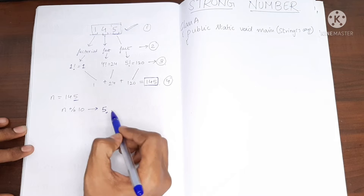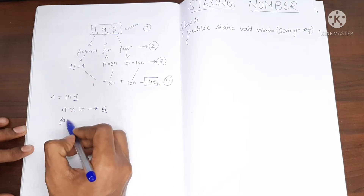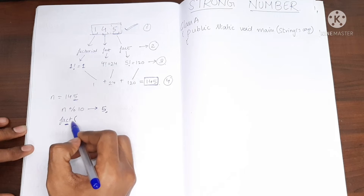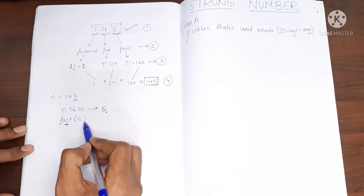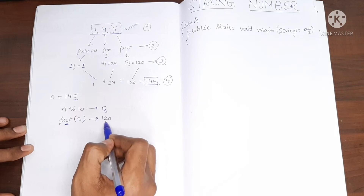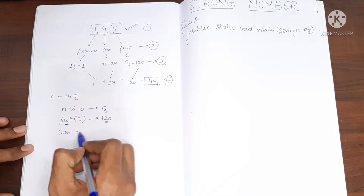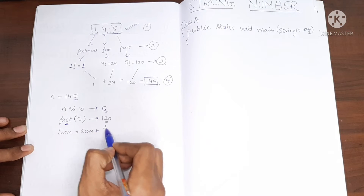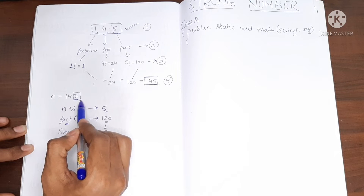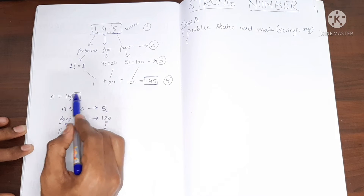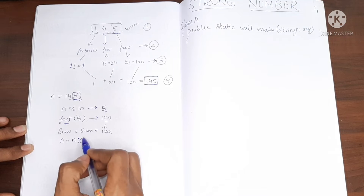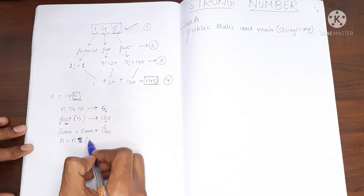Now for this digit we have to find the factorial. We will call a factorial function and pass this 5 into it. It will return 120, which is 5 factorial. We store this value — say sum equals sum plus this value. Since we've used the 5, we no longer need it; we need 4. So we do n equal to n by 10 to eliminate the last digit.